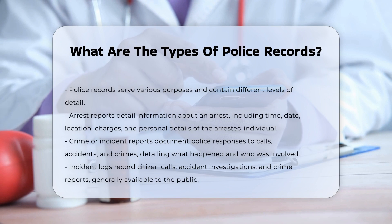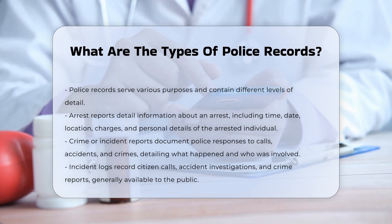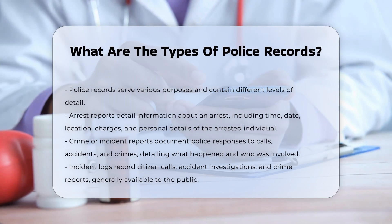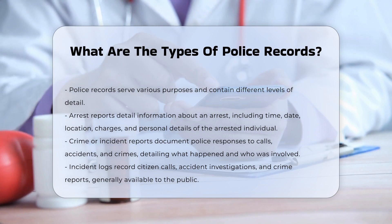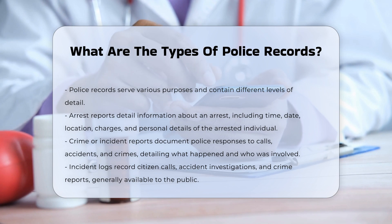Arrest reports. Arrest reports are detailed documents that provide information about an arrest made by police. These reports include specifics such as the time and date of the arrest, the location, the charges filed, and the circumstances surrounding the arrest. They also contain personal details about the individual arrested, including their full name, occupation, date of birth, sex, and physical description.